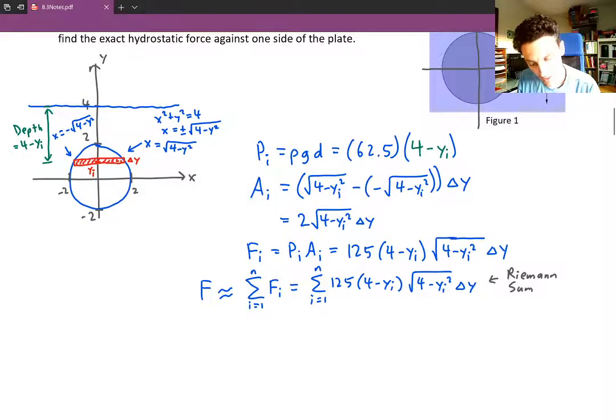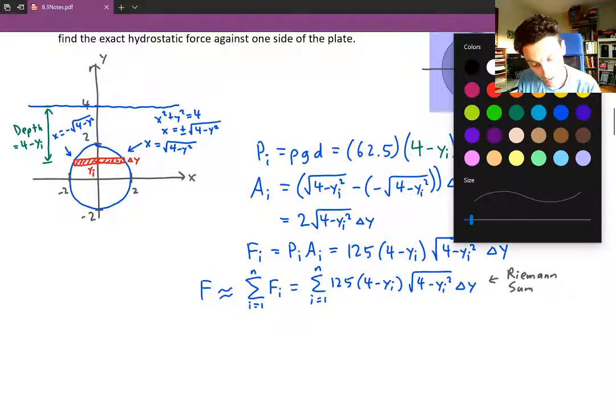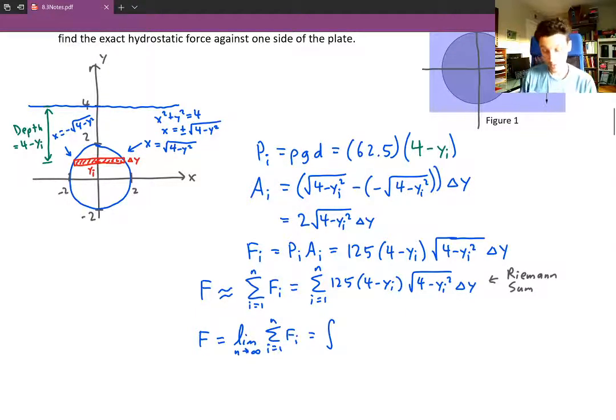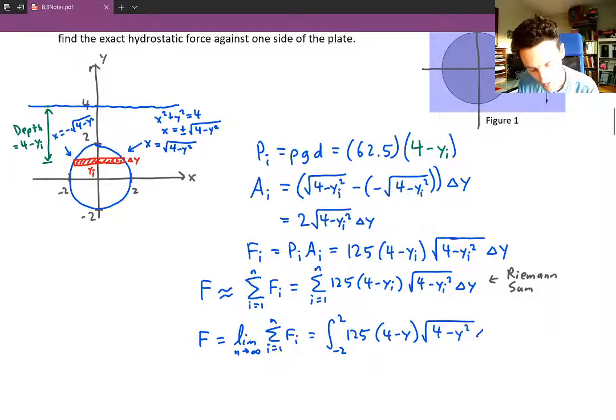So if you take the limit as n approaches infinity, that's where you get the true force acting on the surface. And here I'm just going to jump into the integral, so this is going to turn into the integral from the bottom y value, which is negative 2, to the top y value of 2, of 125 times 4 minus y, times the square root of 4 minus y squared, dy.